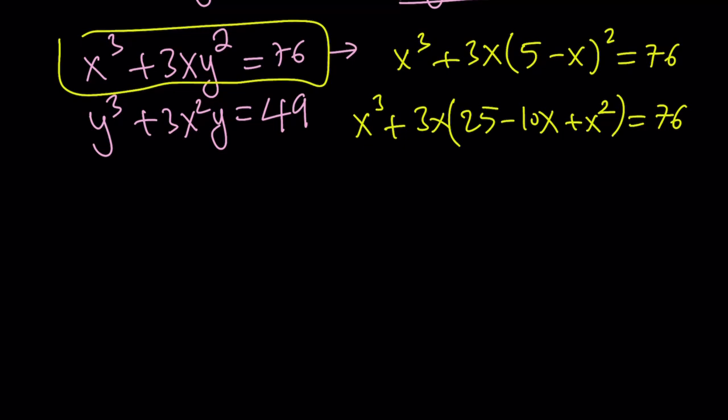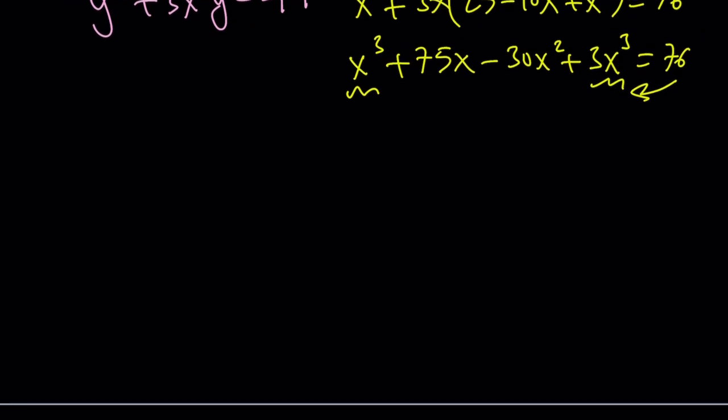Let's expand everything. We get x cubed plus 3x times 25 minus 10x plus x squared equals 76. Distributing: x cubed plus 75x minus 30x squared plus 3x cubed equals 76. Combining like terms and putting everything on the same side gives us 4x cubed minus 30x squared plus 75x minus 76 equals 0.